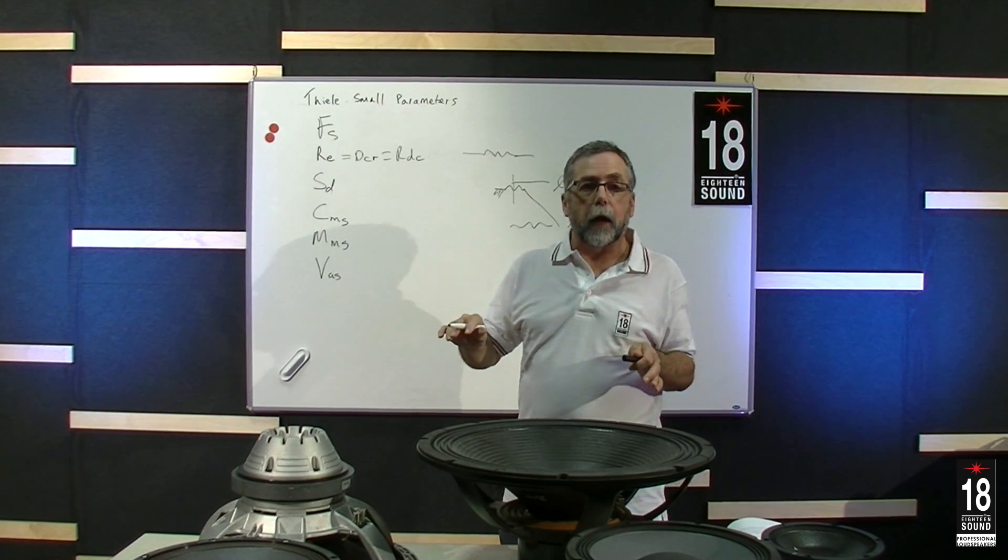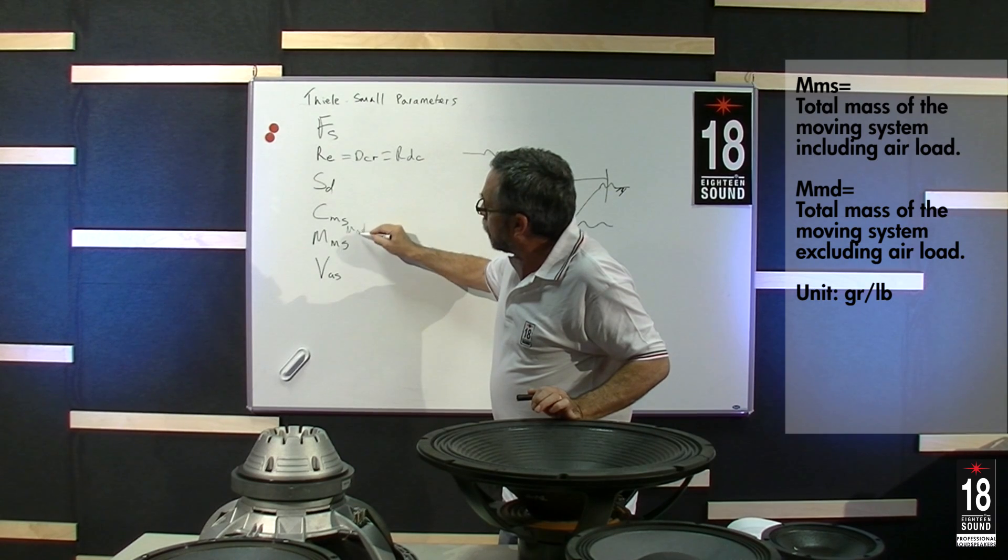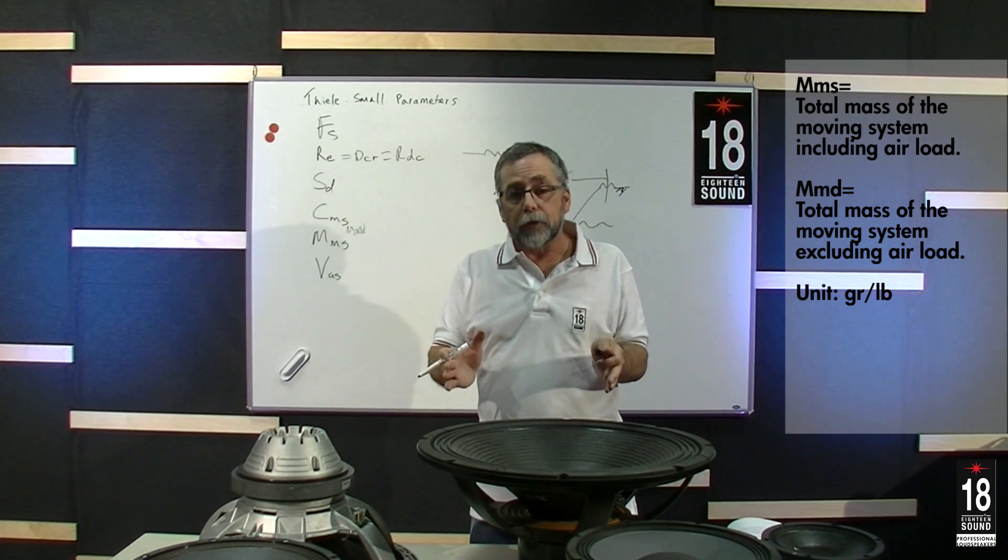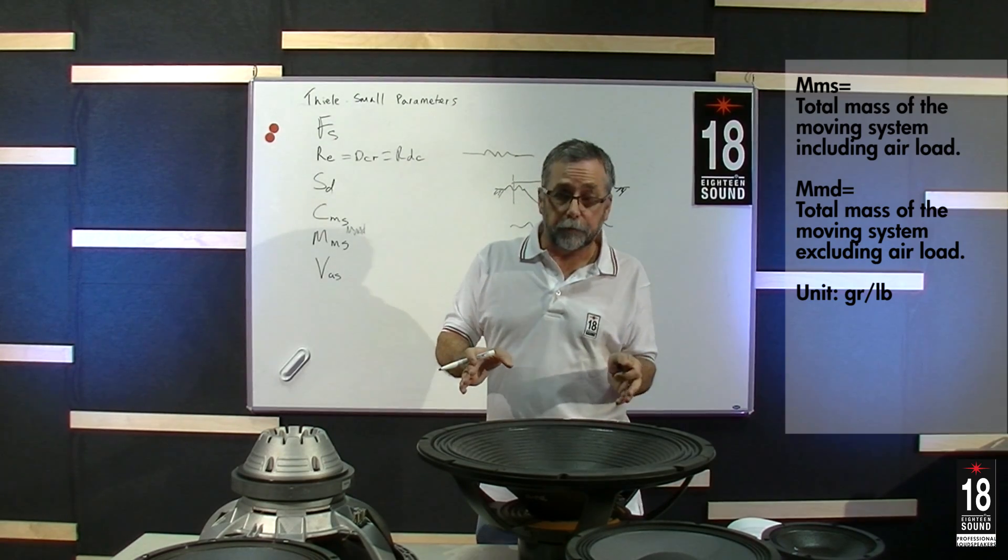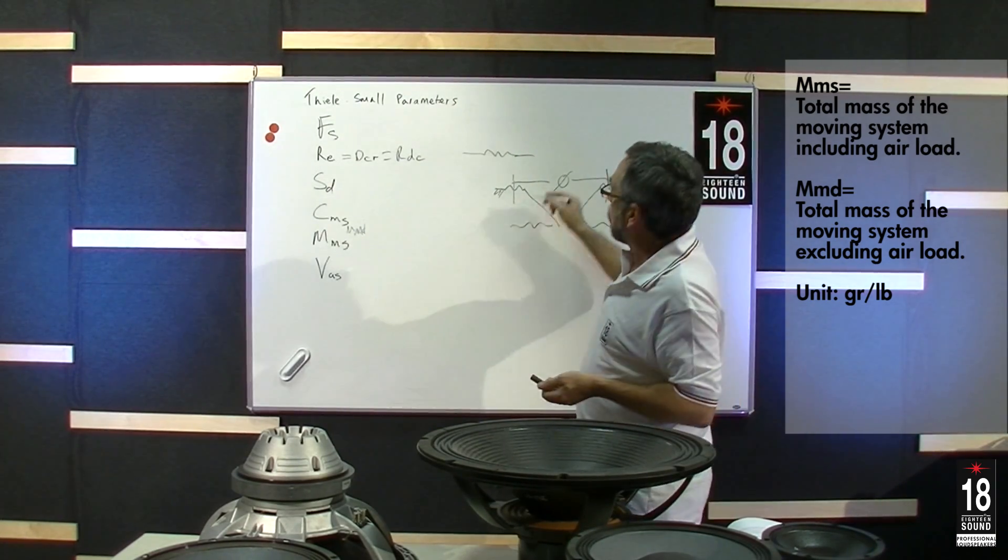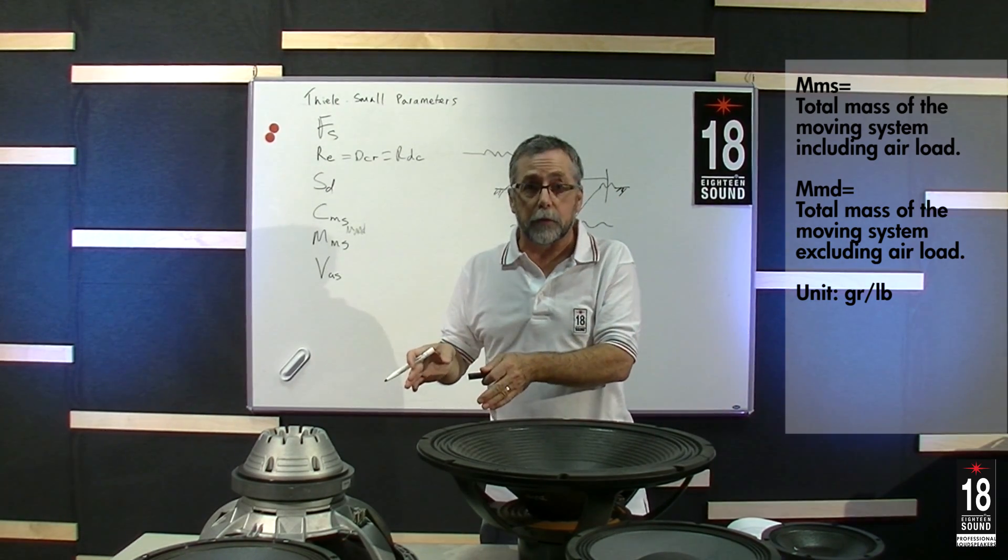MMS is the total moving mass. I will insert MMD, which is the static mass of the parts that can move. That is, if we could take them and put them on the scale. Typically, we will take half of the surround, half of the spider, put it on a scale, that would be the MMD.